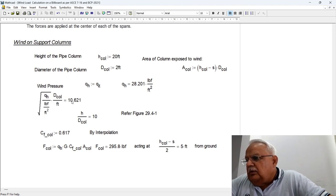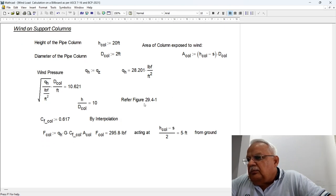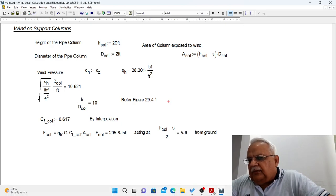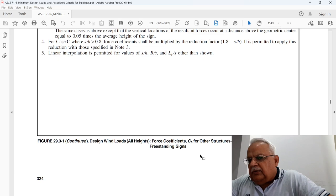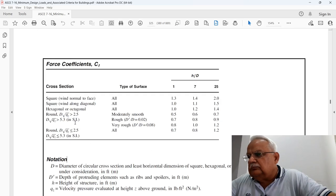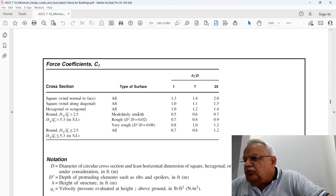Wind pressure will be the same. Now we have to check what is the value of D times under root qh. So this comes out to be 10.67, H upon diameter is 10. So from figure 29.4, we have to calculate Cf and this is by interpolation.